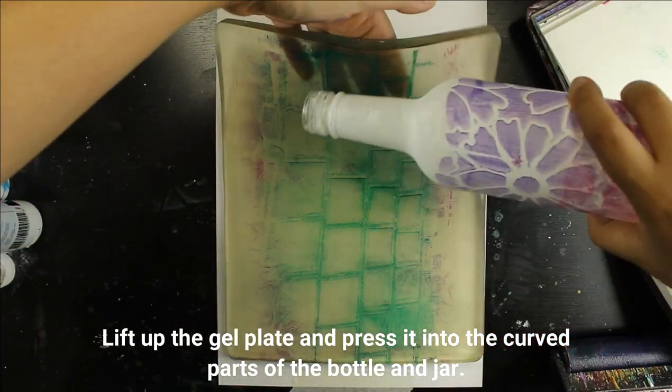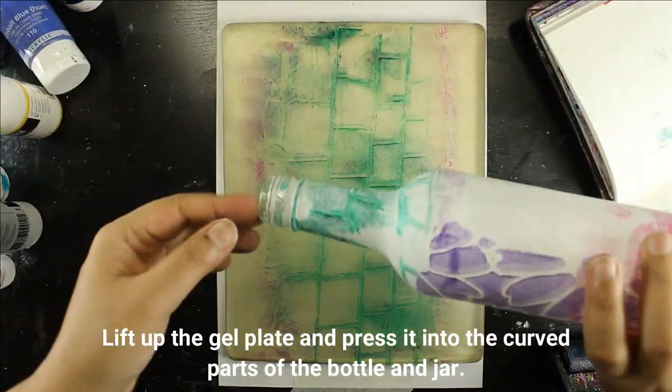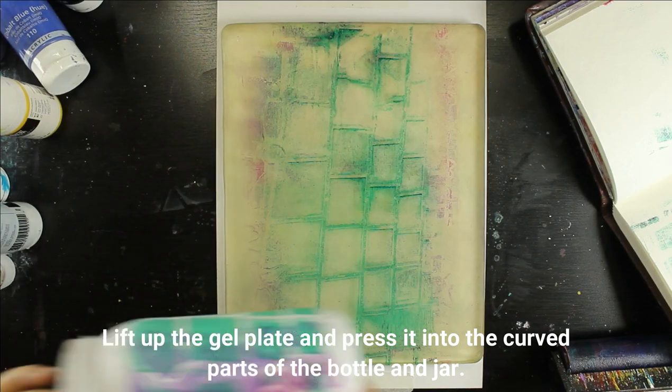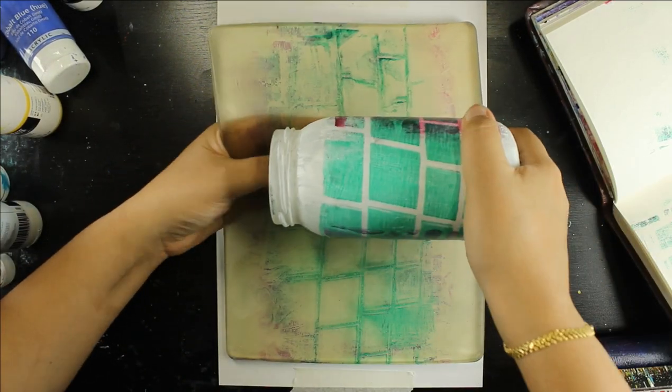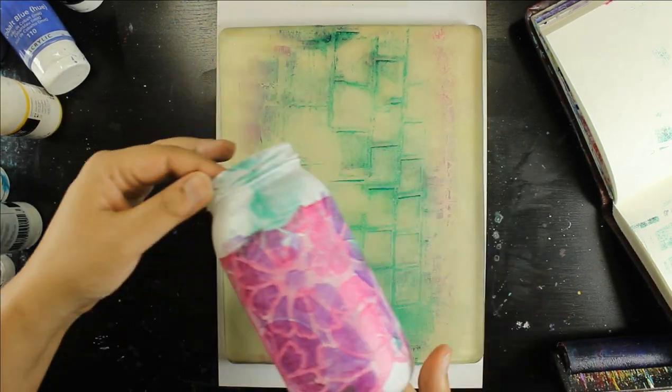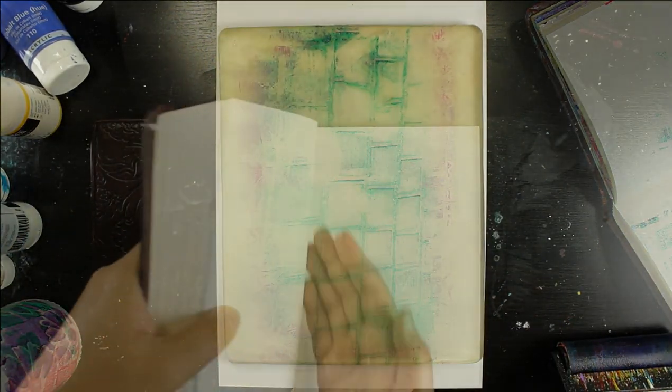I am repeating the process by picking up the paint in parts of my jar and my bottle but not covering the whole thing because I don't want to cover my whole bottle or jar with just one colour. I just want like little blocks of colour here and there. I am using the ladder stencil and here you can see I am picking up the gel plate so that I can use it as a stamp to get into the curved parts of the jar and the bottle.